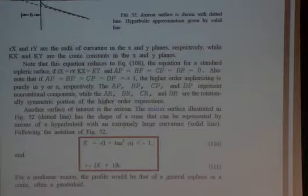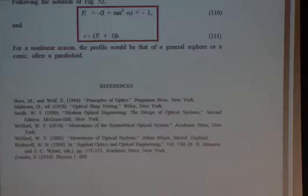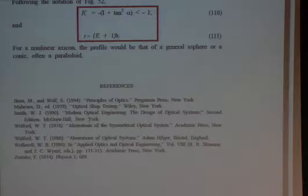I think that's everything I was going to say about conics right now. When we get to our chapter on aspheres, we'll say a lot more about them. A list of references: we've mentioned Wyant's two books many times, also an excellent chapter by Bill Wetherell in Volume 8 of Applied Optics and Optical Engineering, Warren Smith's book, and of course Malacara's book — I would go with the latest edition. And Born and Wolf — how can you live without Born and Wolf?